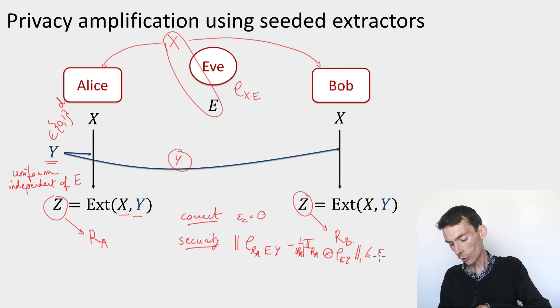This should be close to a state that's uniformly distributed for the key or for the output of the procedure and tensor product with the side information. If you remember, this was the security requirement for privacy amplification. And this is going to be exactly the correctness requirement for the extractor, meaning that if our extractor is secure, then this protocol for privacy amplification. So we've reduced the task of constructing perfectly correct and epsilon secure privacy amplification protocols to the task of coming up with epsilon correct strong seeded extractors.